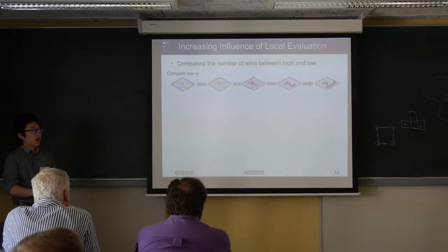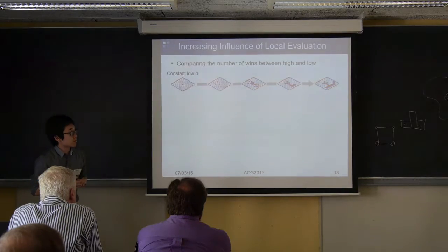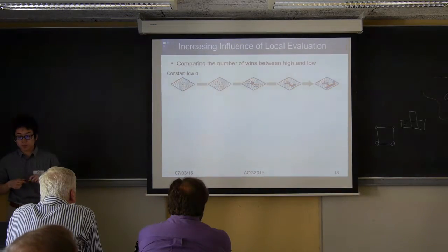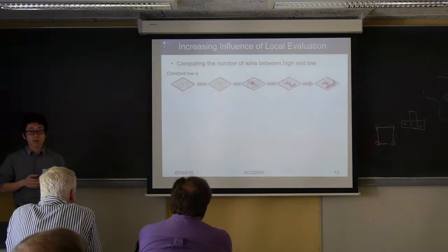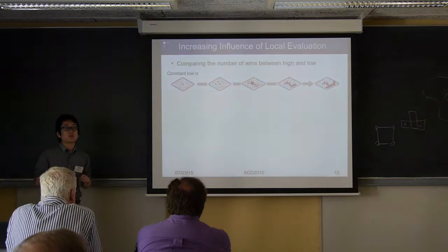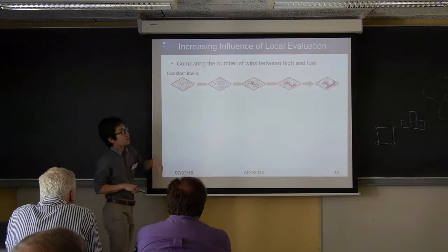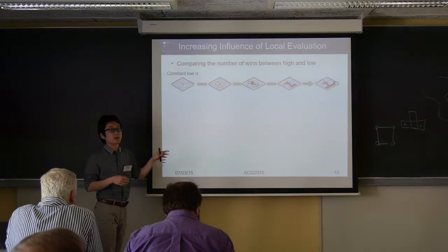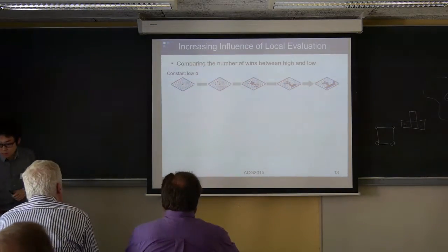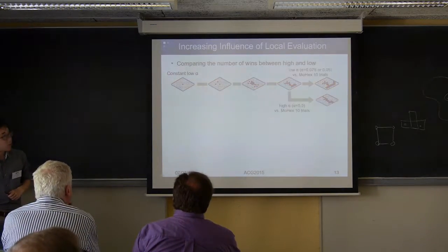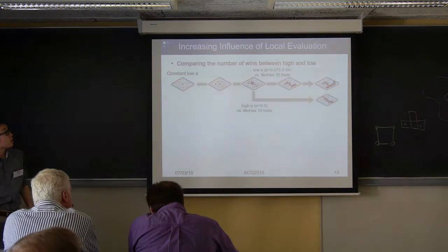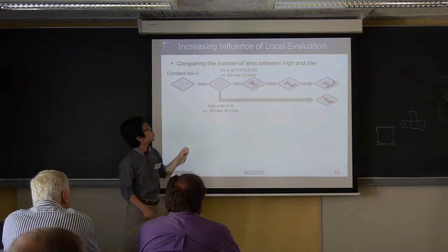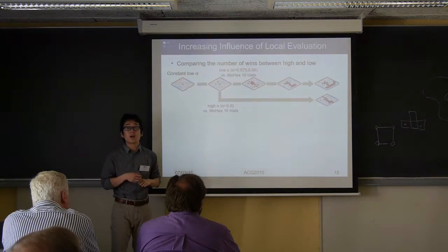To show that high alpha is effective in the later part of matches, we compare the winning percentage of the evaluation function with high and low values of alpha. We prepare board states from previous experiments where fixed alpha plays against MOHEX. We tested matches from the same board states ten times. The high value of alpha was set to 0.5 and the low value was set to the best parameter when alpha is fixed.